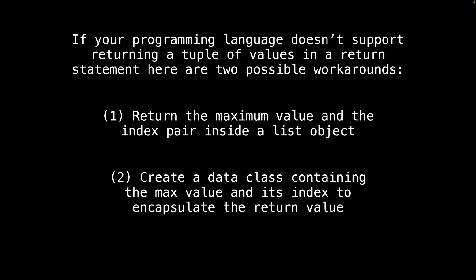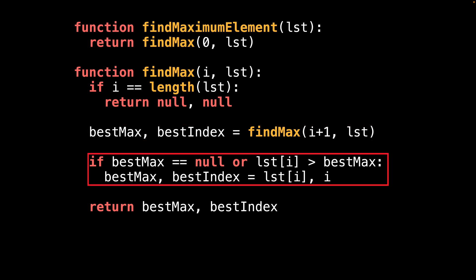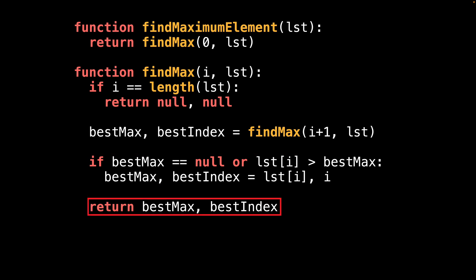Another strategy is to create a wrapper data class encapsulating the max value and its index. I tend to prefer creating a new data class if there's going to be a lot of information being returned, since that tends to keep the data more organized. After that, we get the best known maximum value and its index by calling the find max function. If the best known maximum value is null, or the current value is better than the best known maximum, update the best max and best index. When the best known max is null, this means there is no best maximum value yet, which is why we want to set the best maximum to the current value. After that, simply return best max and best index as the return values.